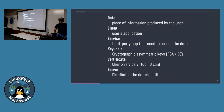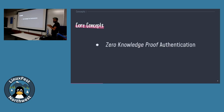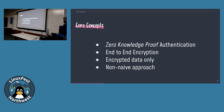So what are the core concepts? First one is zero knowledge proof authentication. Second one is end-to-end encryption. Third one: we work on encrypted data only - no way we use data in plain format except to encrypt it and decrypt it, to access a small part of the data. And fourth is a non-naive approach.